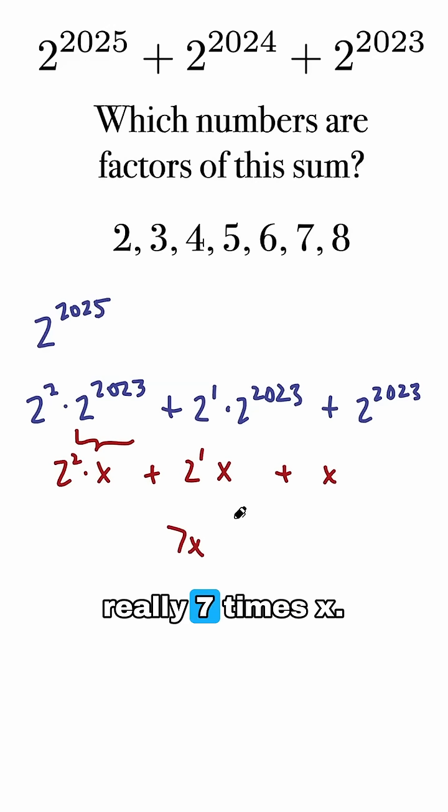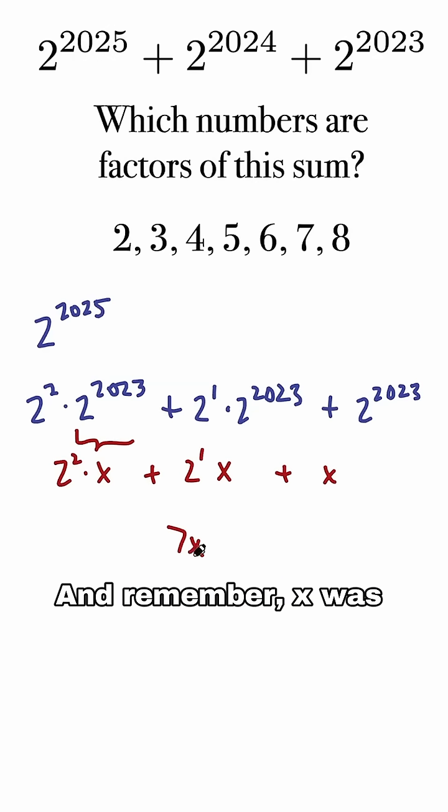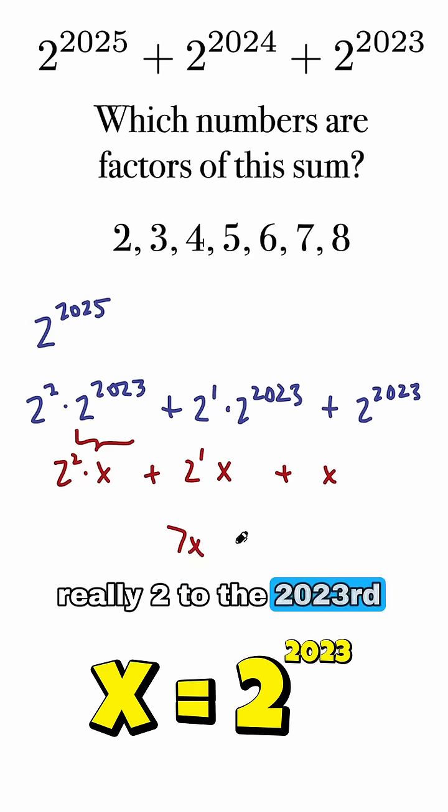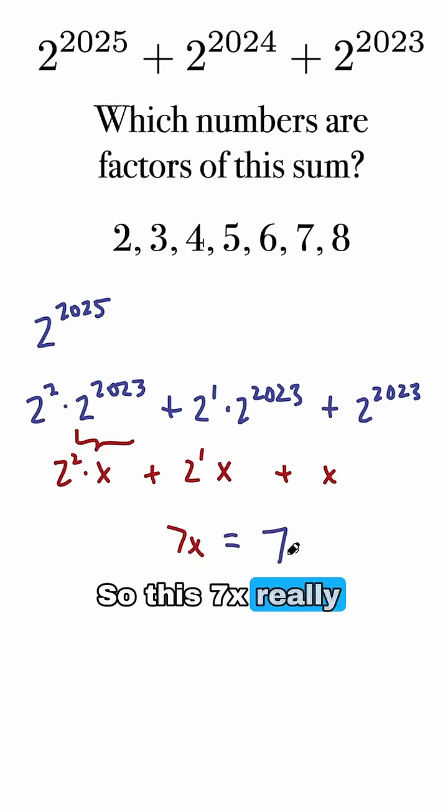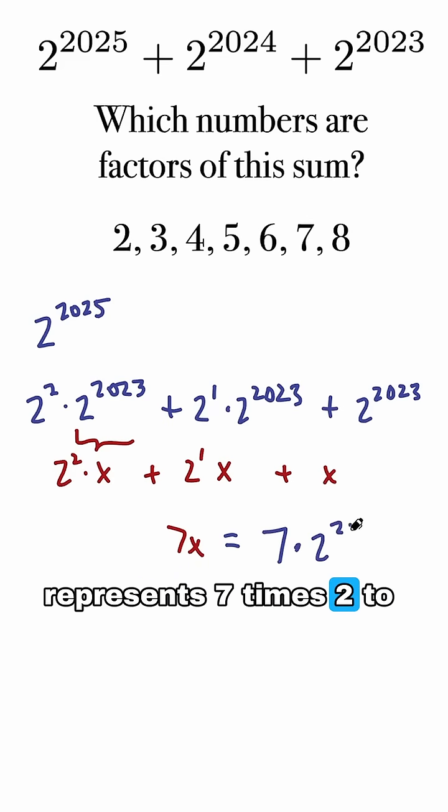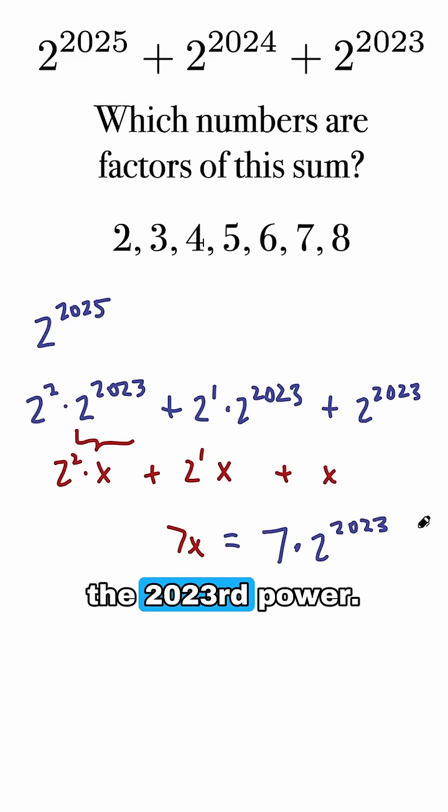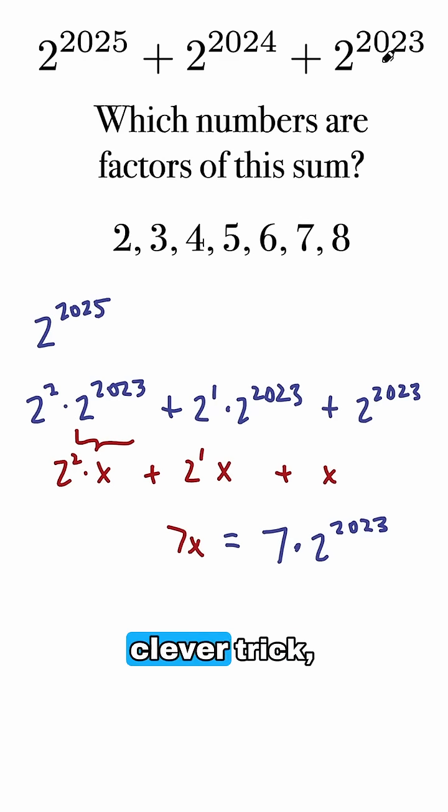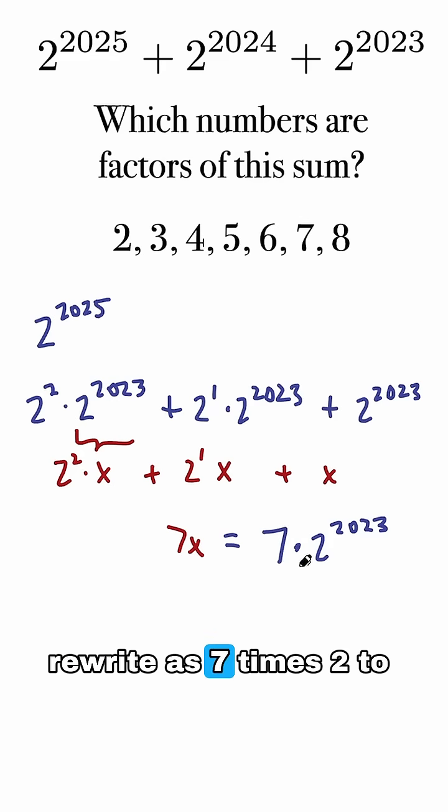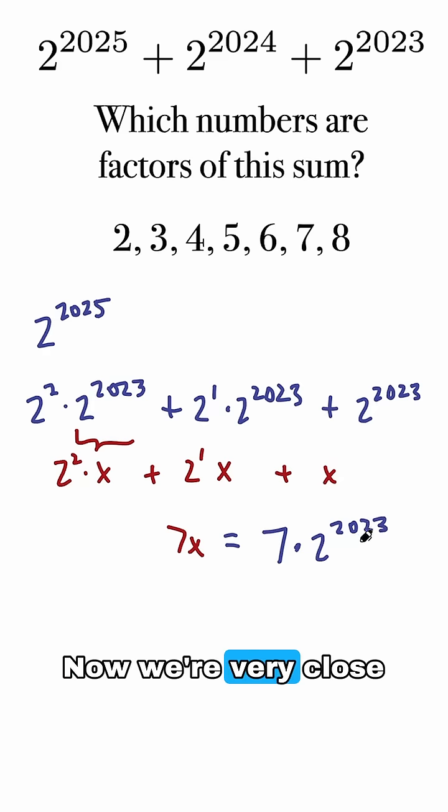That's a grand total of 7x. So this expression is really 7 times x. And remember, x was really 2 to the 2023rd power. So this 7x really represents 7 times 2 to the 2023rd power. And this whole expression, using a clever trick, I've been able to rewrite as 7 times 2 to the 2023rd power.